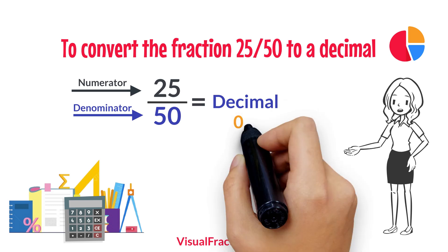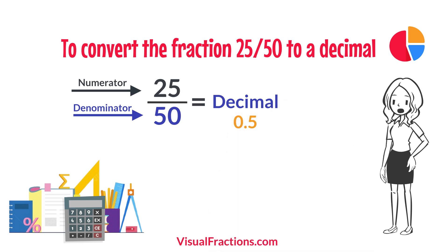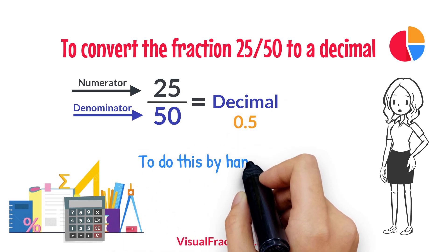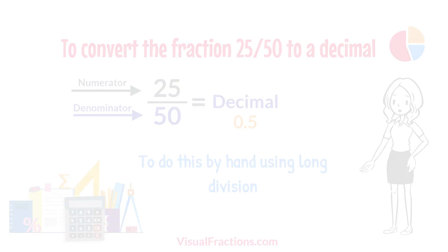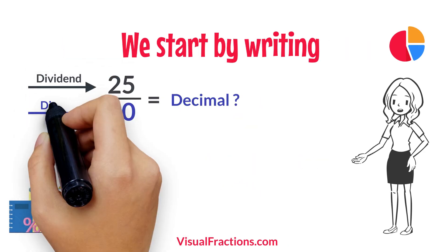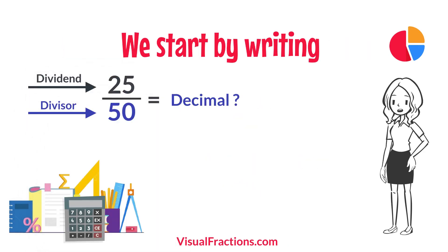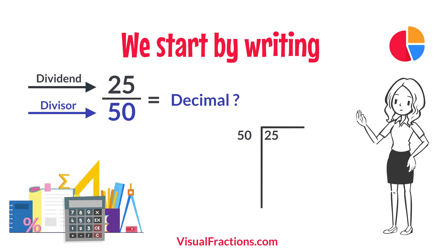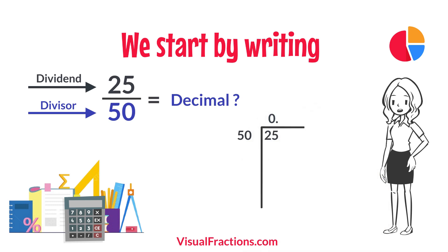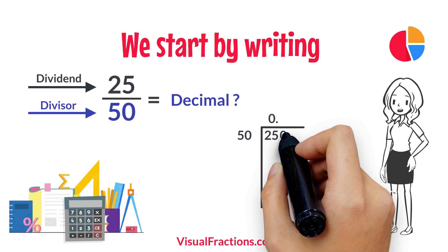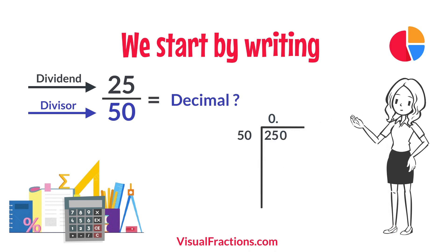The answer we get is 0.5. To do this by hand using long division, we start by writing 25 as the dividend and 50 as the divisor. Since 50 doesn't fit into 25, we add a decimal point in our answer and append a 0 to 25, making it 250.